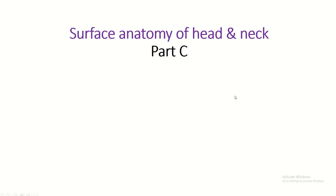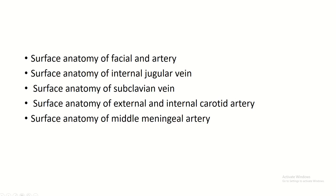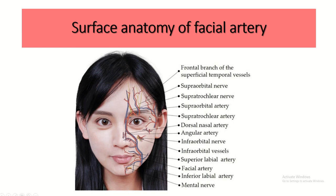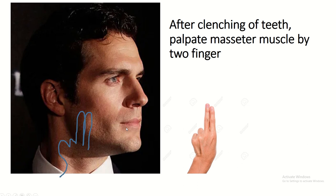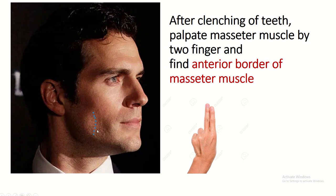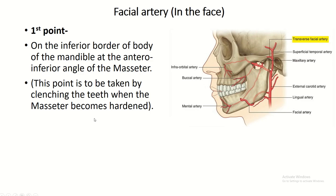Surface anatomy of the head and neck, part 3. First, surface anatomy of the facial artery. After clenching of the teeth, palpate the masseter muscle with two fingers and draw the anterior margin of the masseter muscle. The first point is on the inferior border of the body of the mandible at the anterior inferior angle of the masseter muscle.